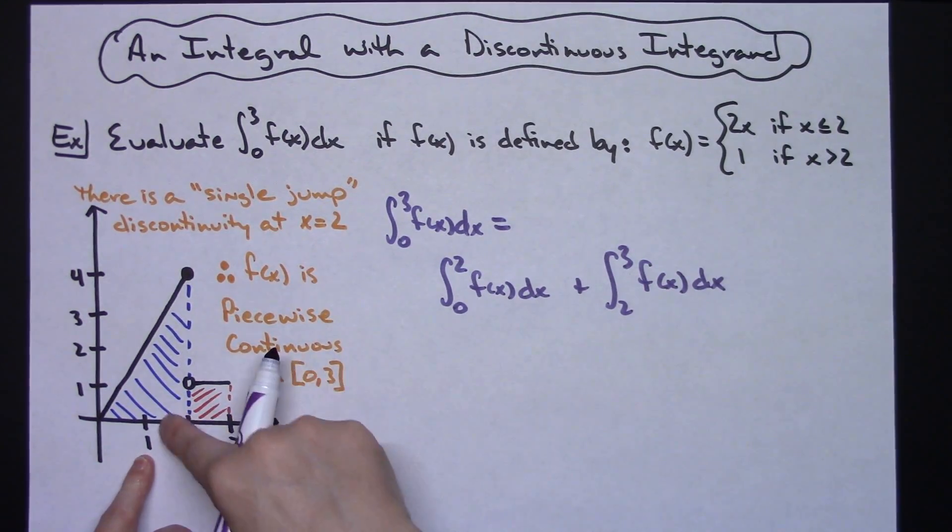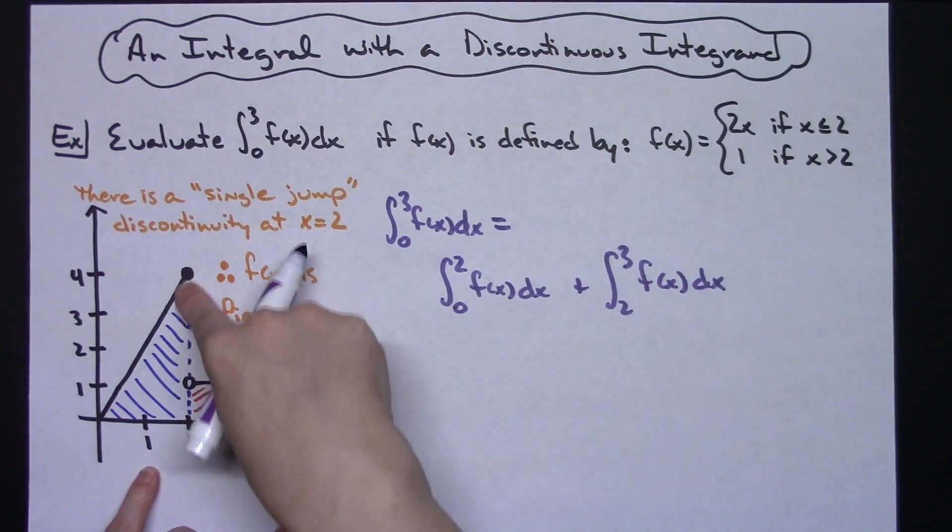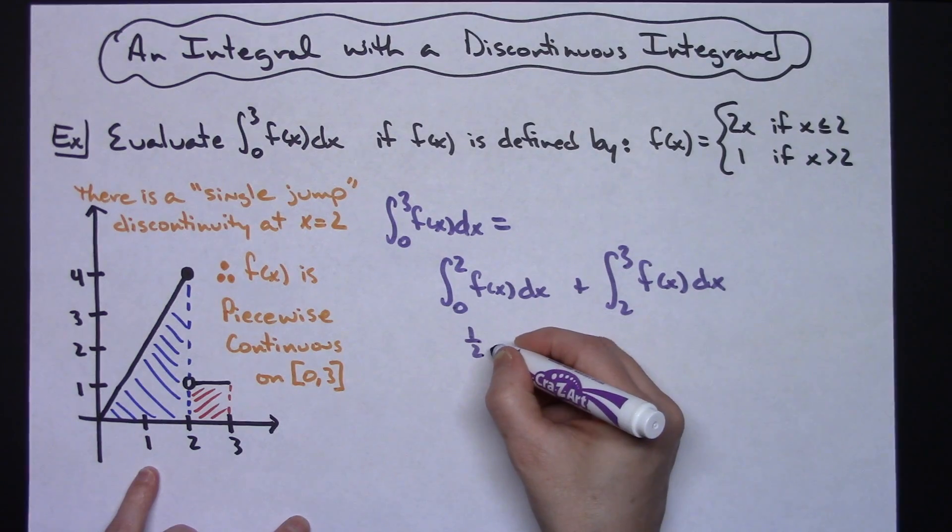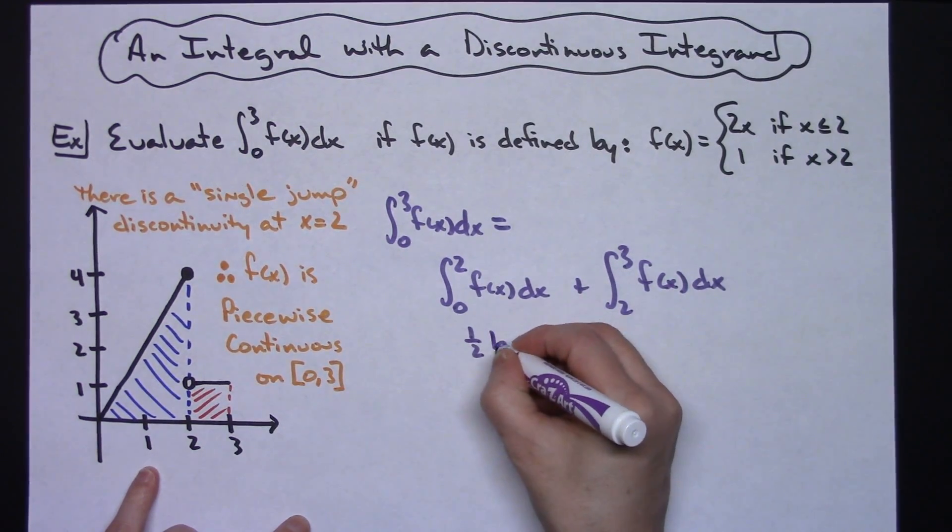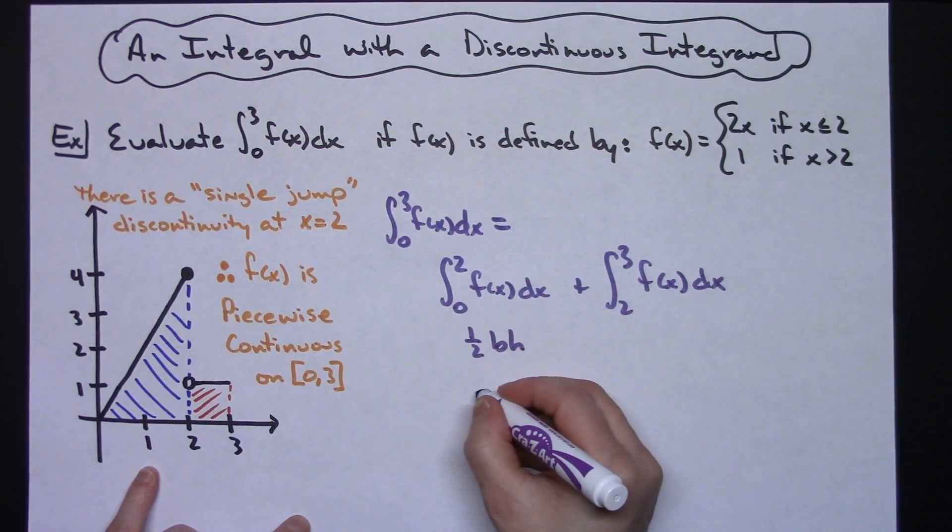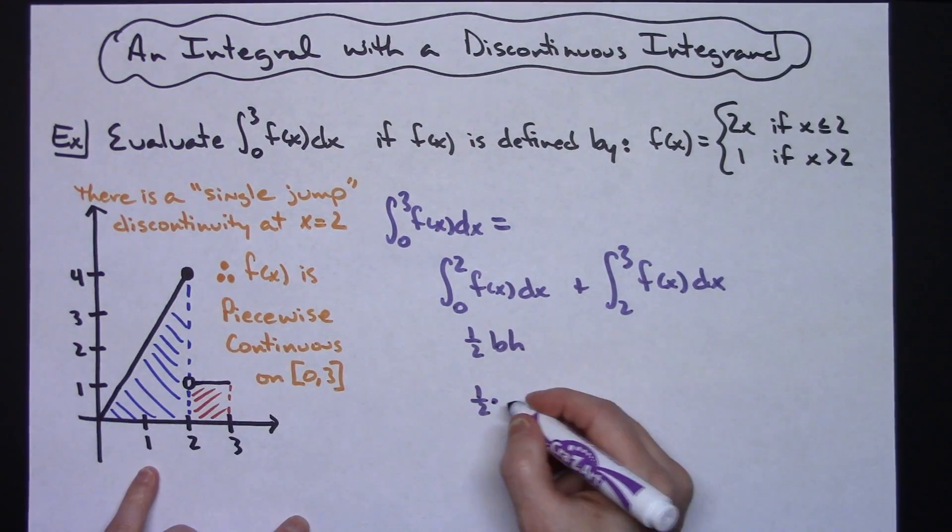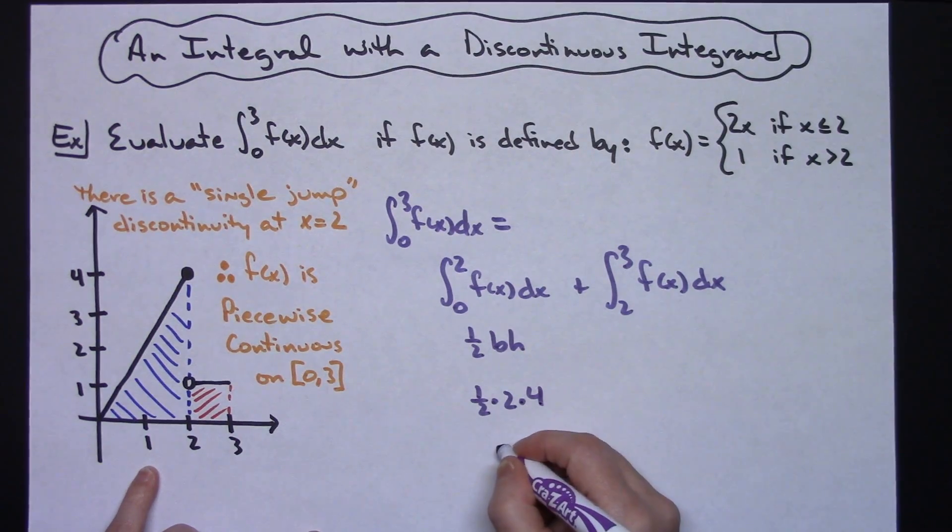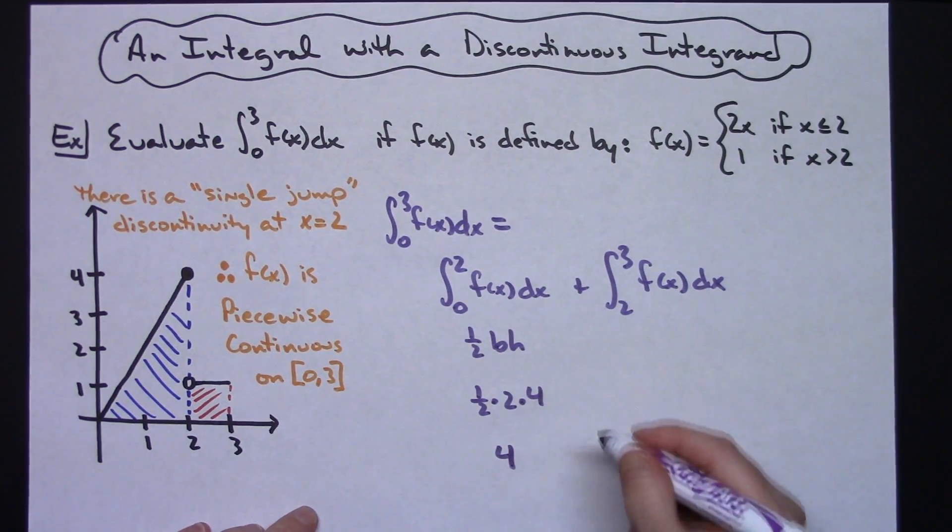All right, and like I said, we're going to use geometric shapes here. So from 0 to 2, that is a right triangle. So I'm just going to use that basic geometric formula of 1 half base times height. That's going to give me a 1 half times the base of 2, height of 4, which gives me an overall total of 4.